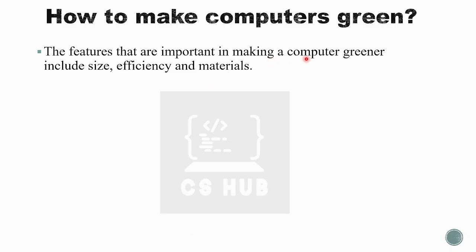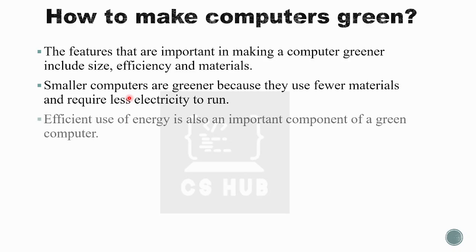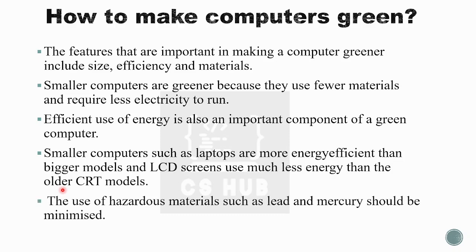Key features important in making a computer green include size, efficiency, and materials. A smaller computer is greener because it requires less material and uses less electricity — for example, a flat panel display. Efficient energy use is important: laptops are more energy efficient than bigger desktop models. LCD screens use much less energy than CRT monitors. Hazardous materials such as cadmium, mercury, and lead should be minimized.